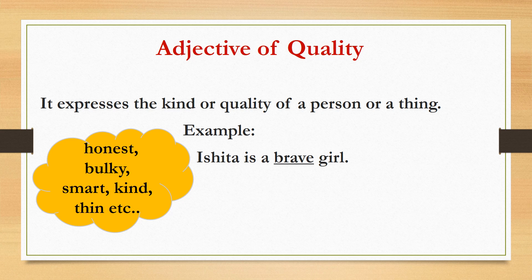Let's read the definition. Adjective of quality expresses the kind or quality of a person or a thing. The example here is: Ishita is a brave girl. In this sentence, girl is a noun and Ishita is again a noun, and you are telling more about Ishita — that she is a brave girl, and that is her quality. So the word brave will be the adjective of quality. Some more examples of adjectives of quality are honest, kind, thin, bulky, smart, etc.